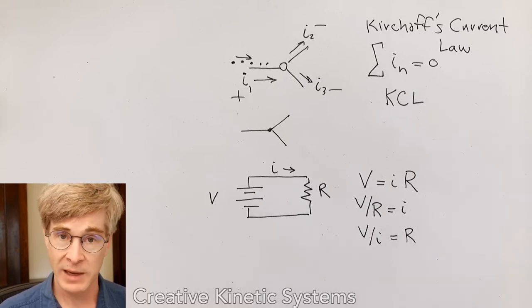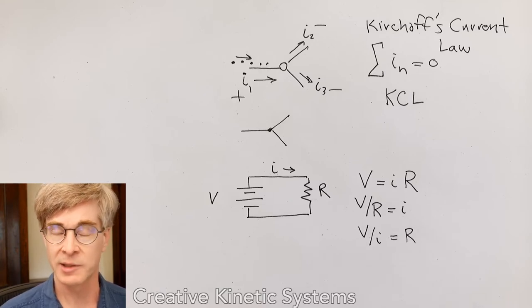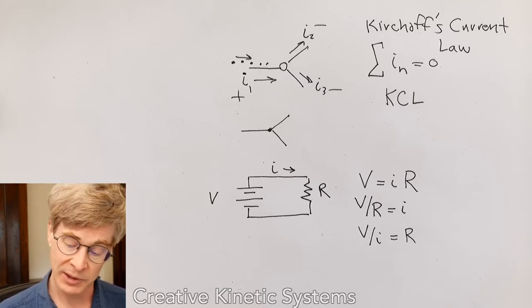And if you put a voltmeter, sorry, a multimeter in its resistance mode across a resistor, that's exactly what it does. It puts out a small voltage and measures the resulting current.